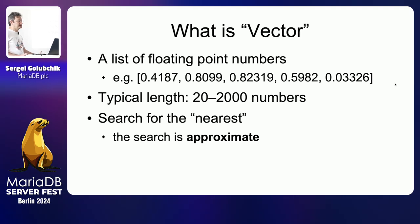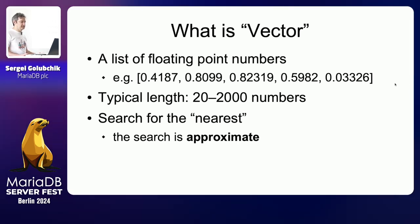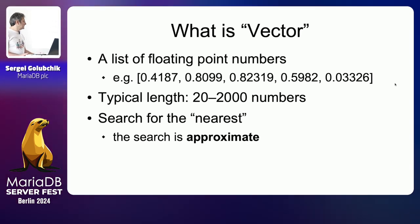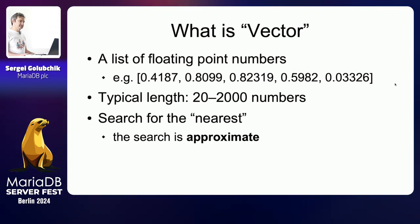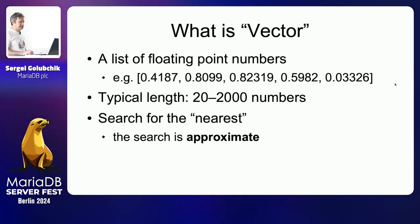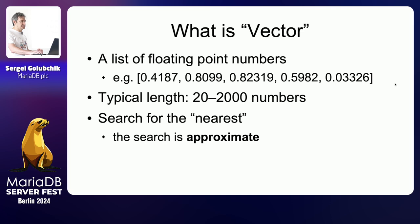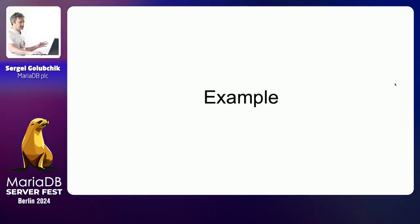When you search, you always search for the nearest vector — you need to find the five most similar vectors to what the user wants. When you find those vectors you find the original text, images, or music that was used to generate them. Unlike most other database technologies, vector search is approximate — it's not guaranteed to find the exact closest vectors, but they should be good enough. There's a numerical measure called recall that measures how close the approximate result is to the exact one.